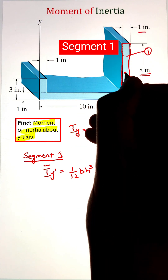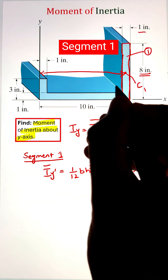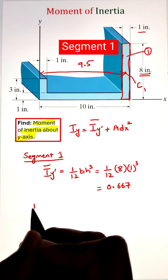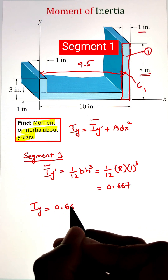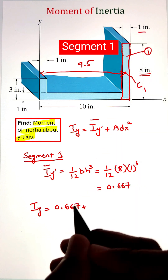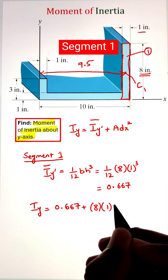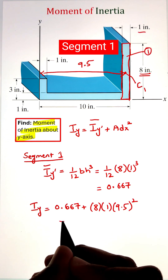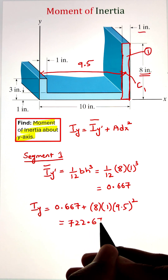Next, we have to project this along the y-axis. Utilizing our parallel axis theorem, we have to identify the distance between the centroid of the rectangle to the y-axis. In this case, the value is 9.5 inches. Plugging it into our formula, we get a value of 722.67 inch raised to the power four. That is the moment of inertia of segment one about the y-axis.